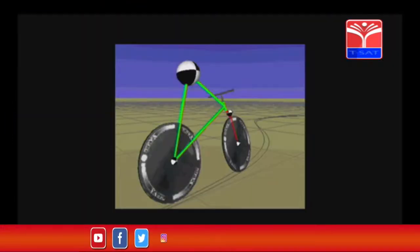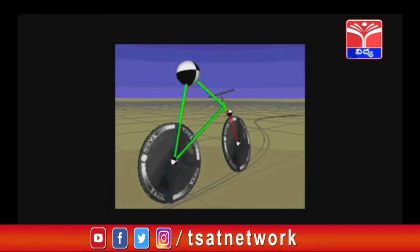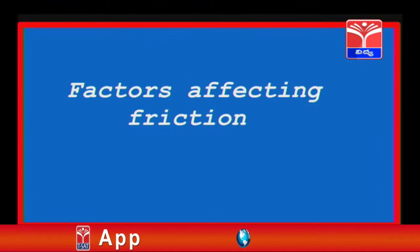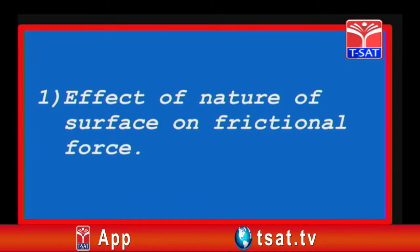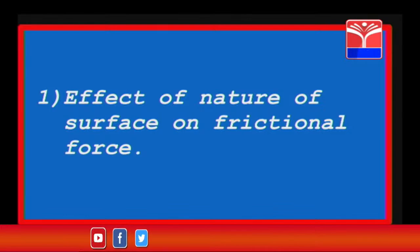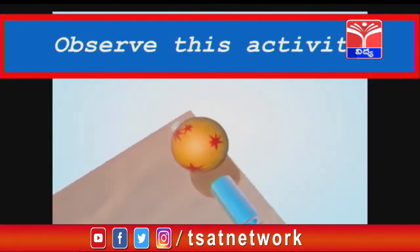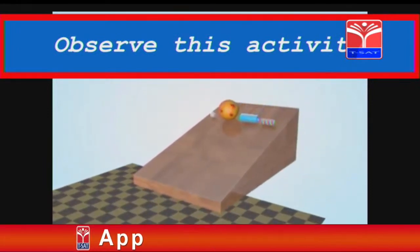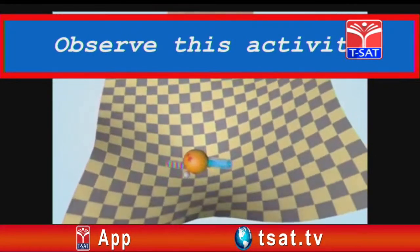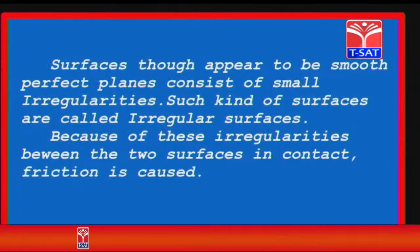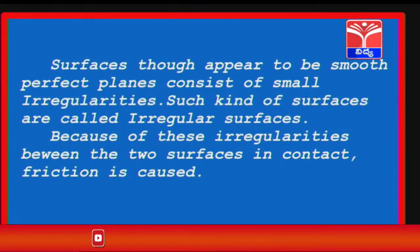Now let us know about the types of frictional force — for example, in the wheels of a cycle and the surface of the floor. Let us look into the factors affecting friction. The first one is the effect of the nature of surface on frictional force. Observe this activity: a ball, a bead, and two cylindrical objects are moving through an inclined plane. Which object travelled a long distance? Which object travelled a small distance? Surfaces, though they appear to be smooth perfect planes, consist of small irregularities. Such kinds of surfaces are called irregular surfaces.